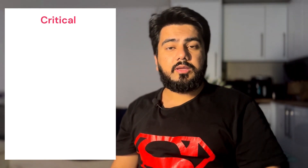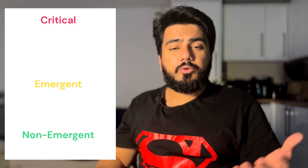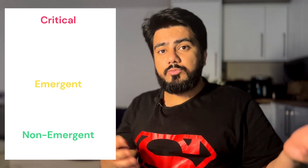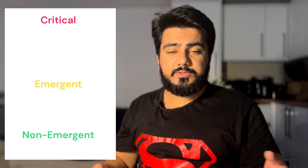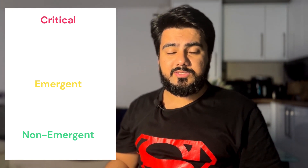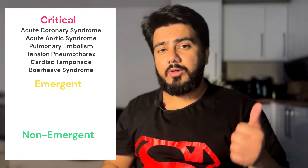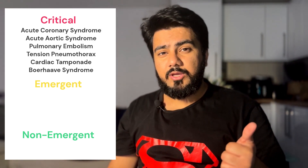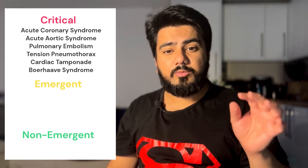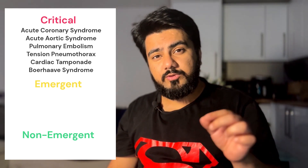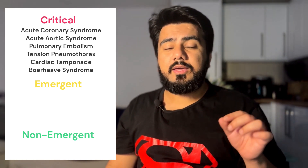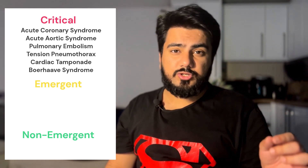Today's video is going to be divided into a couple of categories of diagnosis: critical, emergent, and non-emergent conditions. We're going to be focusing more on the critical diagnoses, which are essentially six in number. So you have acute coronary syndrome, pulmonary embolism, acute aortic syndrome, Boerhaave syndrome, cardiac tamponade, and tension pneumothorax.